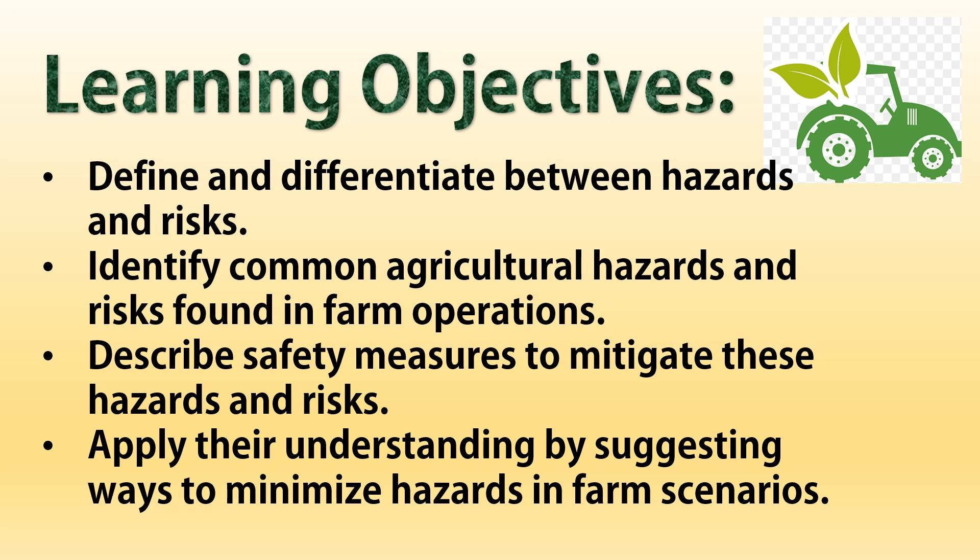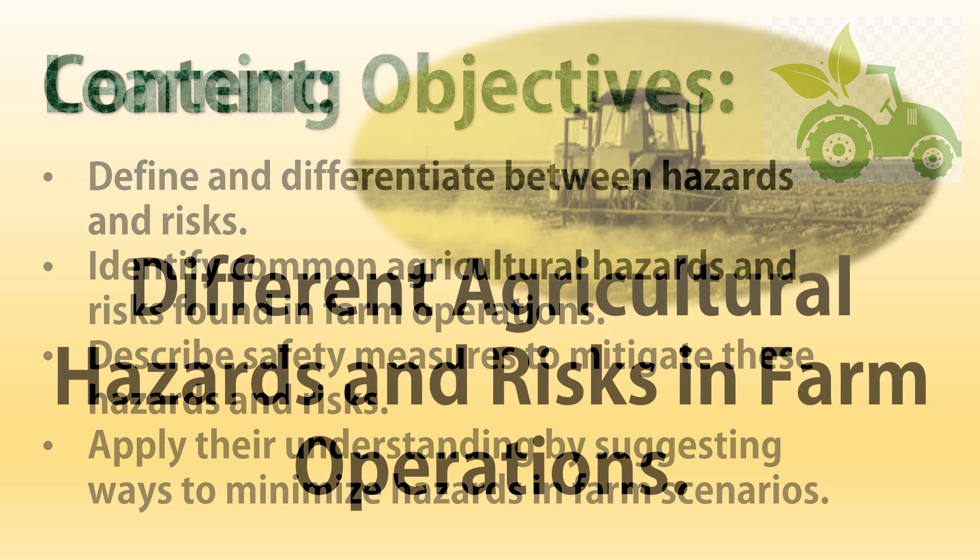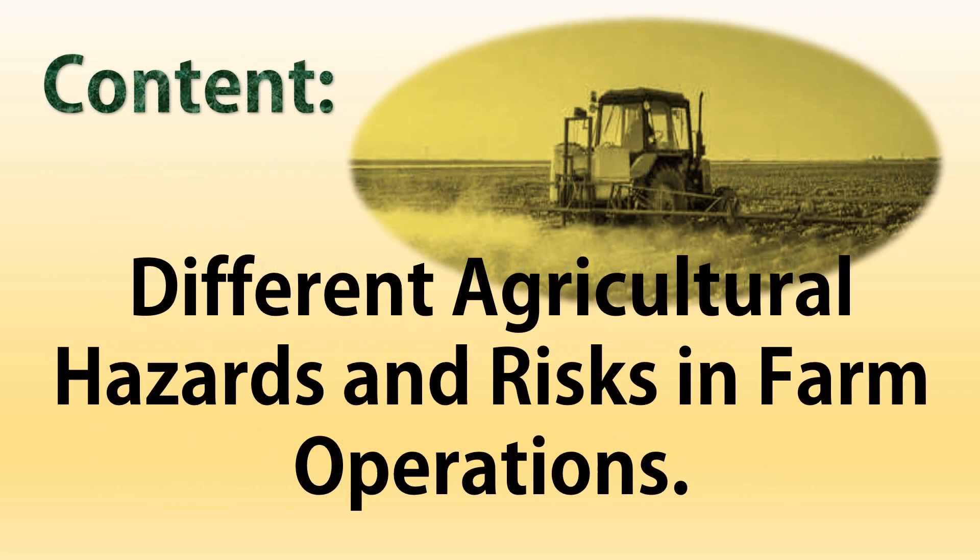Learning objectives: Define and differentiate between hazards and risks. Identify common agricultural hazards and risks found in farm operations. Describe safety measures to mitigate these hazards and risks. Apply their understanding by suggesting ways to minimize hazards in farm scenarios.